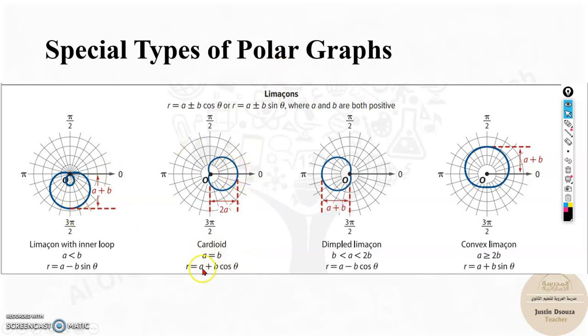The thing about cardioid is the values of a and b are equal. That is the only difference. A limasson has the same standard form, but only difference is the a and the b, the constant values are equal. If it was r equals 2 plus 2 cos theta, then it's called a cardioid. Only when these are equal. But if it's less than b or greater than b, in different cases, you will always get a limasson itself, but it will be the dimple, convex or inner loop.